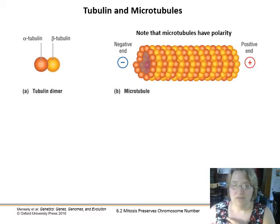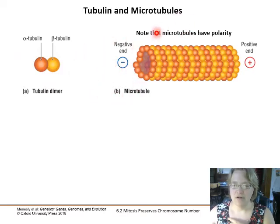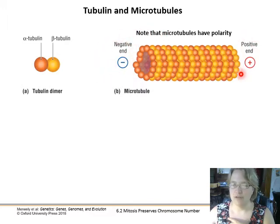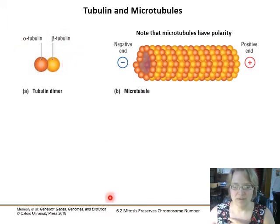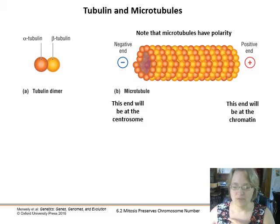The compound pulling chromosomes apart is tubulin, a polymer of protein made up of a dimer — an alpha subunit and a beta subunit. These align in pairs along an axis, creating polarity: a negative end and a positive end based on amino acid charges. The negative end connects to the centrosome, and since DNA is negatively charged, it connects to the positive end near the chromatin.